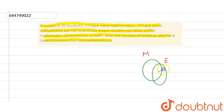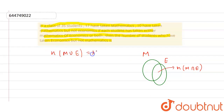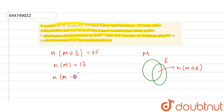Let this circle represent economics. The common part is n(M ∩ E). It was given that in a class there are 35 students, so n(M ∪ E) = 35. It was given that n(M) = 17, and 10 have taken mathematics but not economics, so n(M − E) = 10.